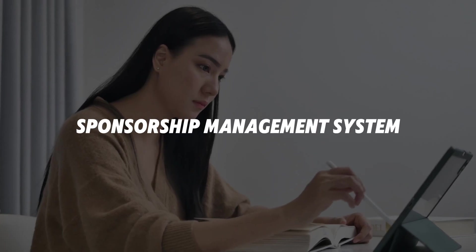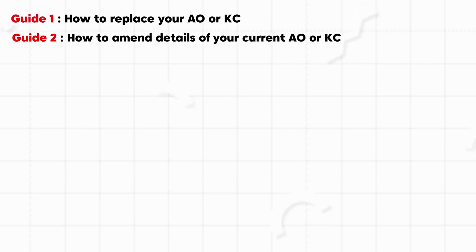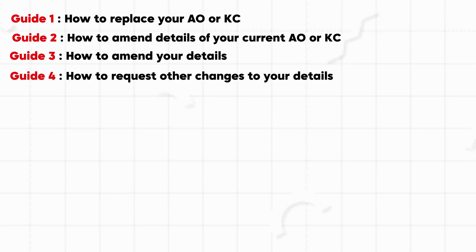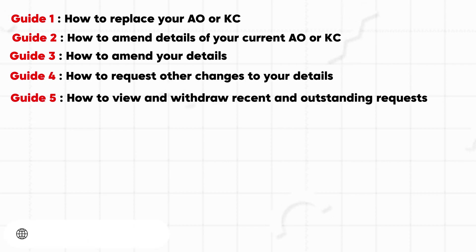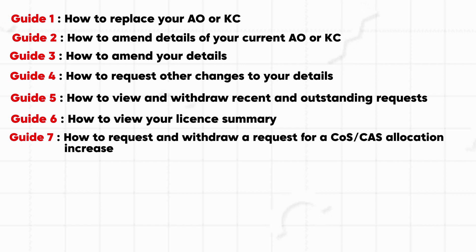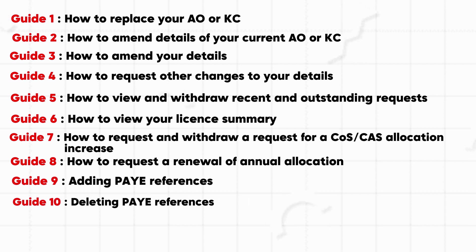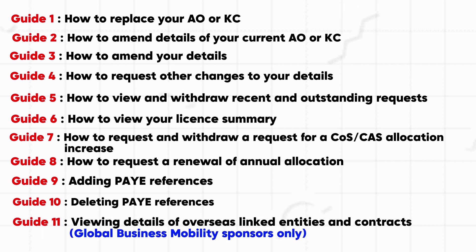Welcome back to another video of Sponsorship Management System. In this video, we will learn how to replace your authorizing officer, how to amend details of your current authorizing officer, how to amend your details, how to request other changes to your details, how to view and withdraw recent and outstanding requests, how to view your license summary, how to request and withdraw a request for COS or CAS allocation, how to request a renewal of annual allocation, adding payee references, how to delete payee references, and viewing details of overseas linked entities and contracts. This last topic is for Global Business Mobility Sponsors only.